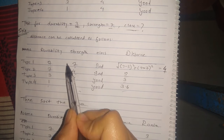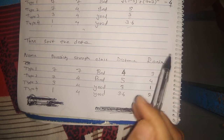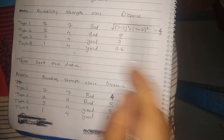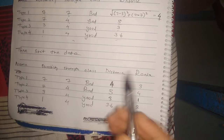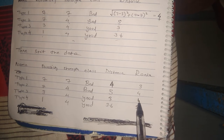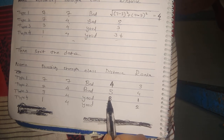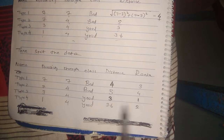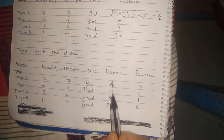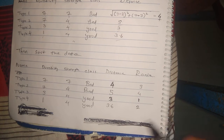After finding the distances for all training data points, we will sort the data in ascending order and assign ranks. The smallest distance gets rank 1, then 3.6 gets rank 2, then 4 gets rank 3, and 5 gets rank 4. So basically we are sorting the distances and giving them a rank.